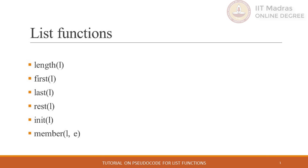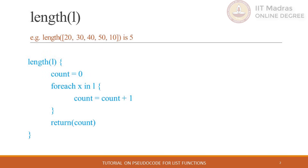It is possible to write function definitions in many different ways, as we have learned earlier — procedures with the same interface can have different implementations. Length is a function which counts the number of elements in a list. Therefore it accepts a list as a parameter and returns an integer which represents the count of elements.